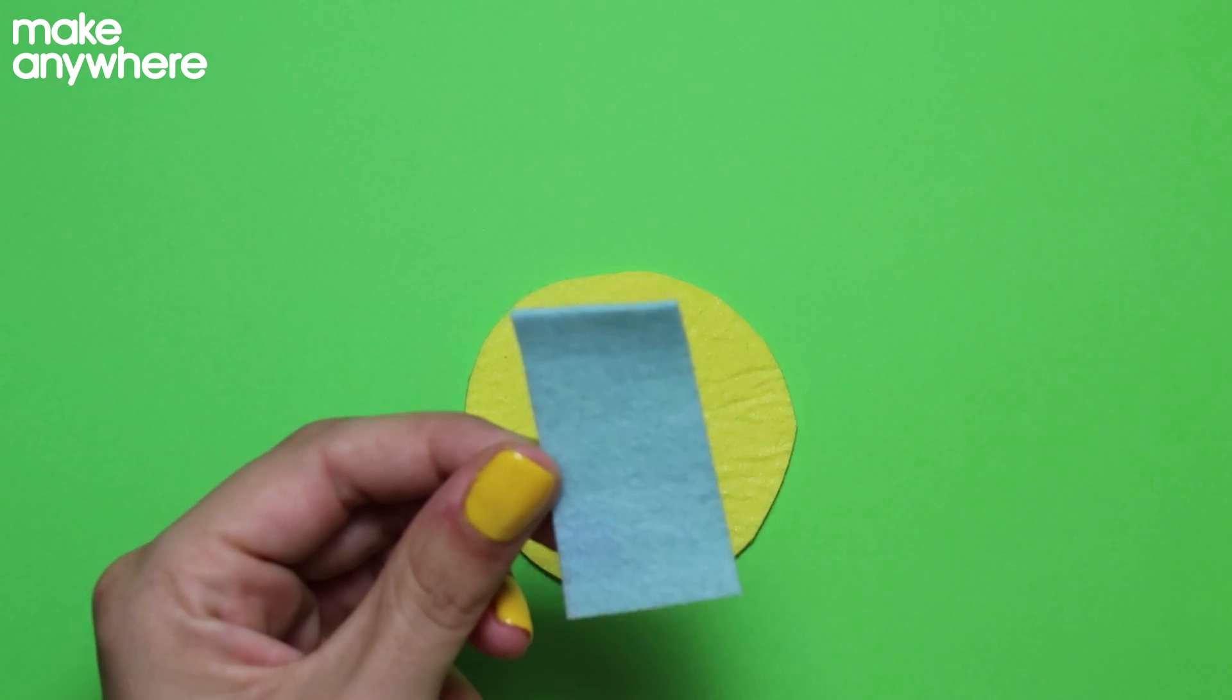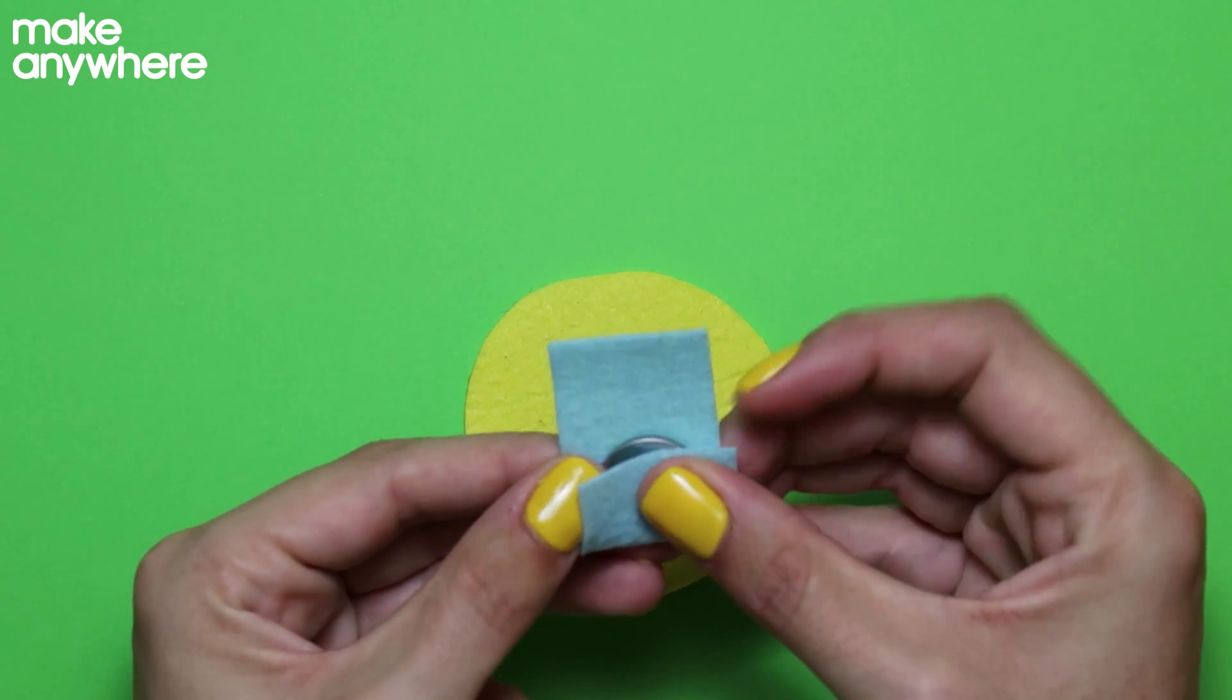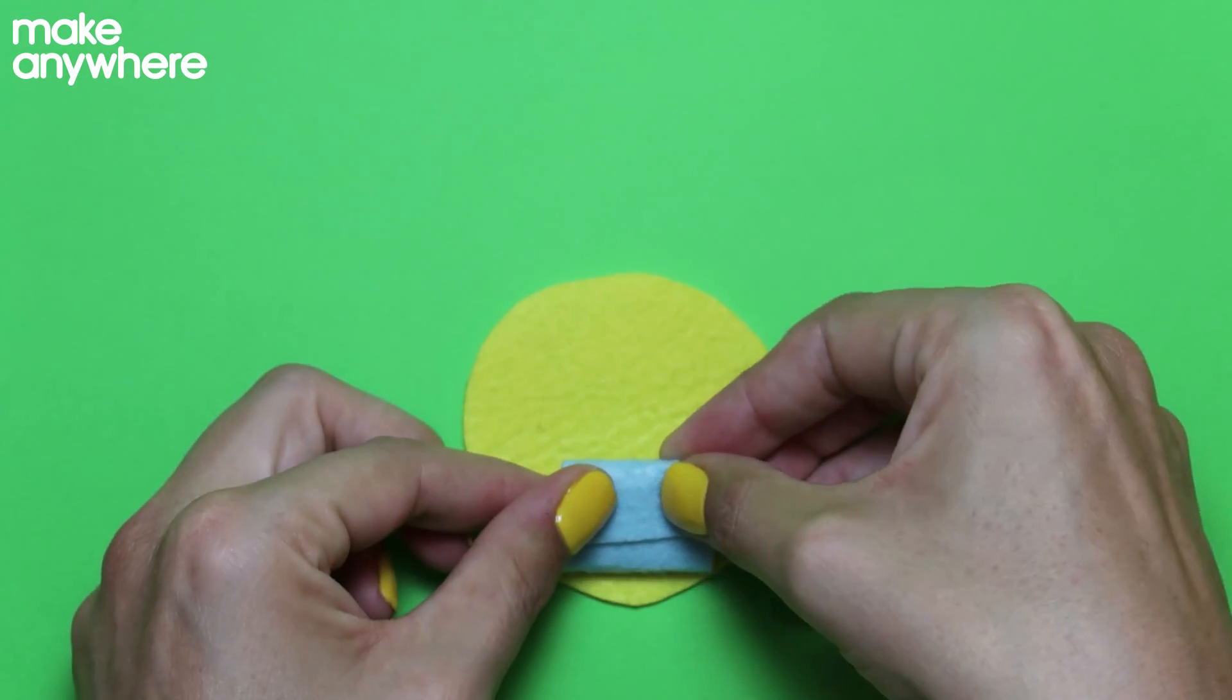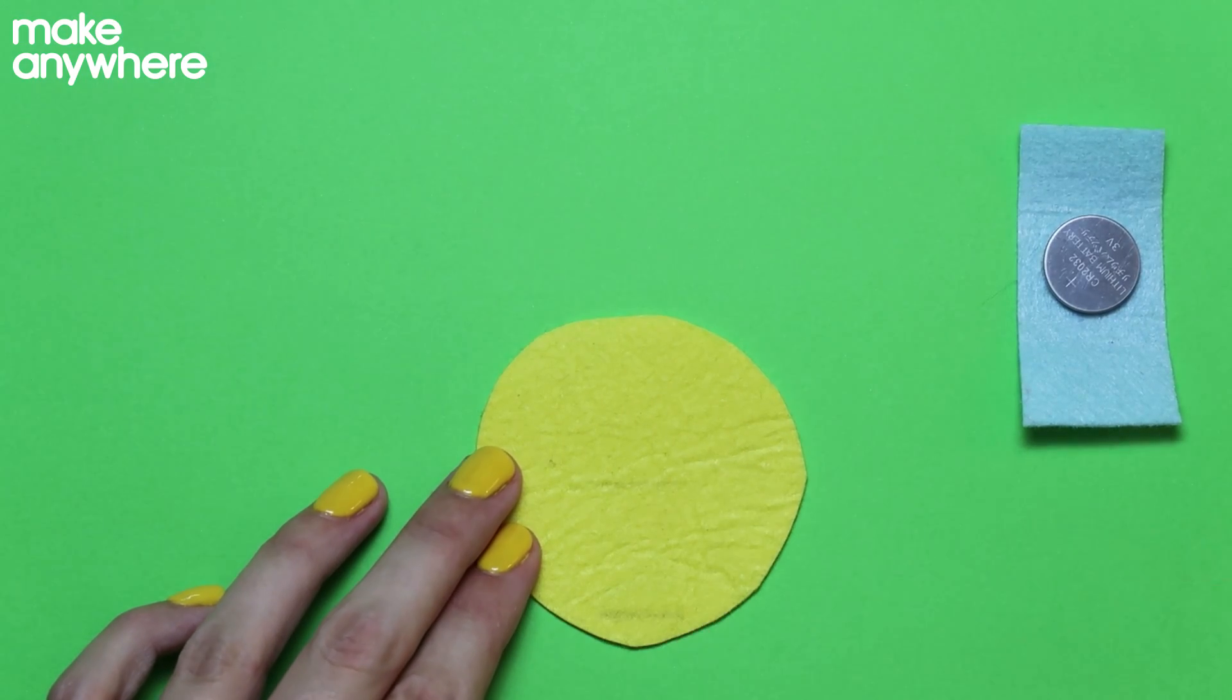Okay, so let's map out where everything's going to go. This is going to be your battery holder. Your battery will sit in the middle with one flap over the top and then that one tucking in. You want your battery holder to sit near the bottom.